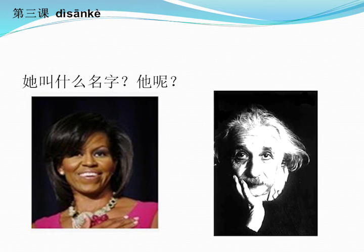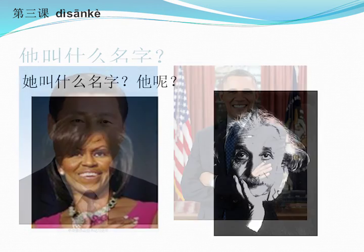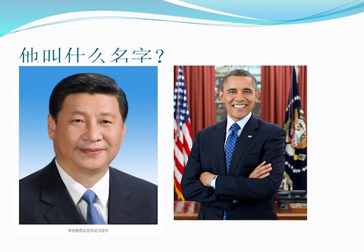And the next person you see, you know him, right? 你认识他。他叫习近平。他呢？你认识他。他叫Obama Barack。